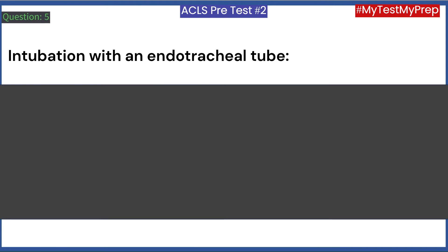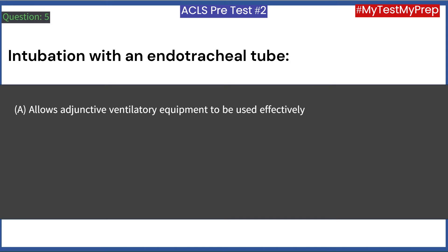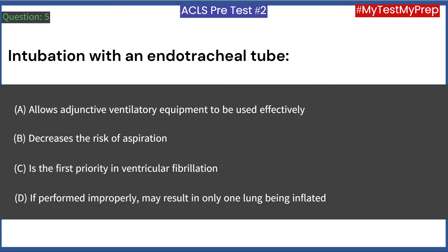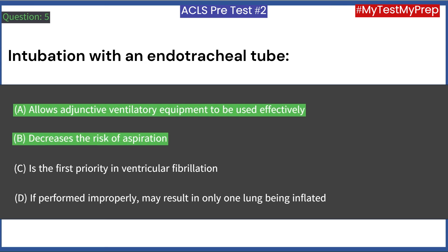Intubation with an endotracheal tube: A. Allows adjunctive ventilatory equipment to be used effectively. B. Decreases the risk of aspiration. C. Is the first priority in ventricular fibrillation. D. If performed improperly, may result in only one lung being inflated. Answer: A, B, D.